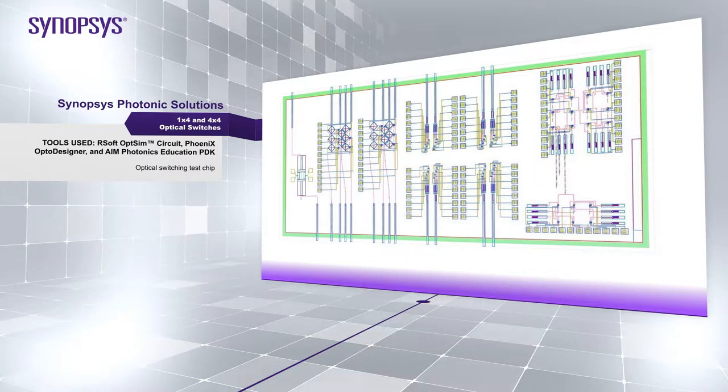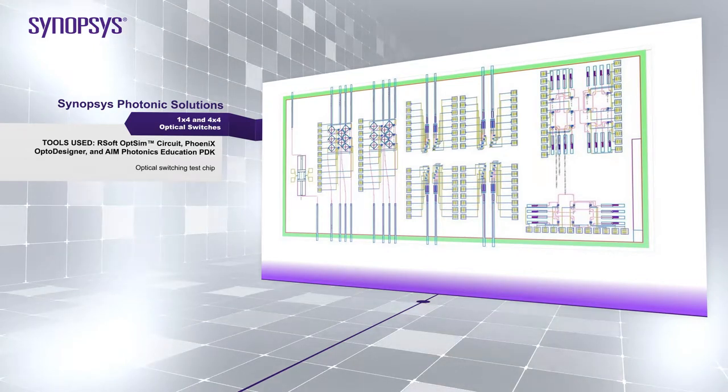We support more than 30 process design kits or PDKs from foundries worldwide for a range of photonic processes such as silicon, silicon nitride, indium phosphide, polymers, and silica on glass.